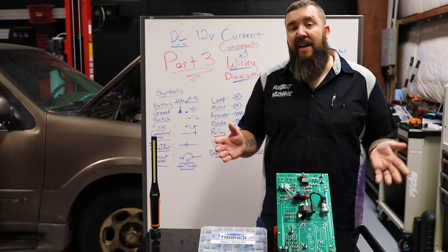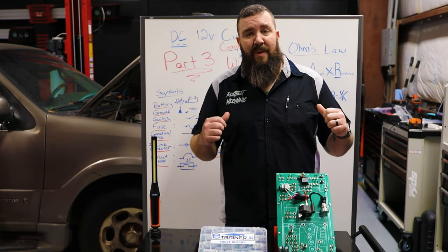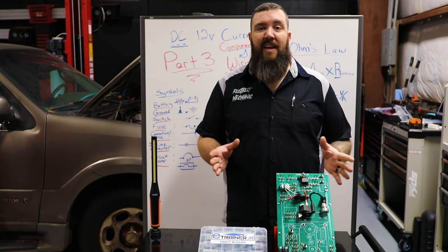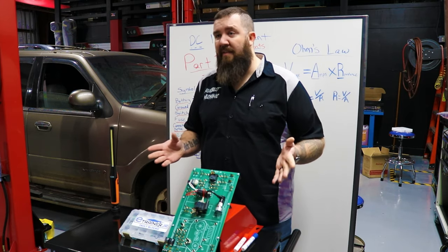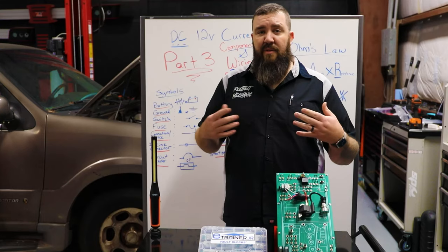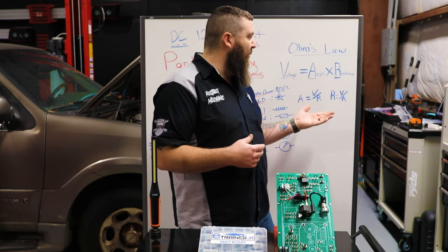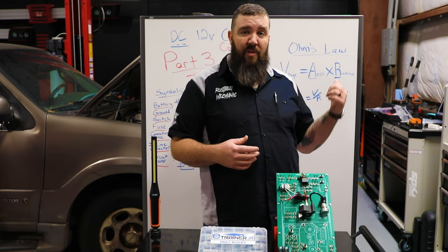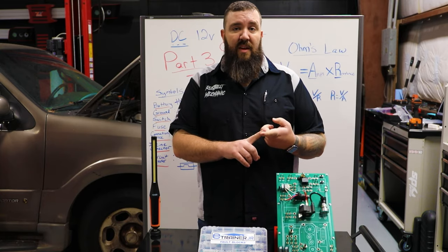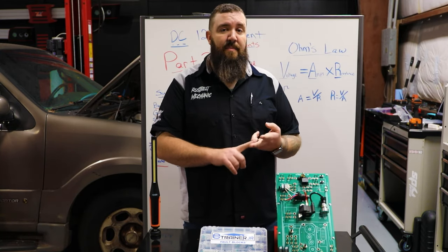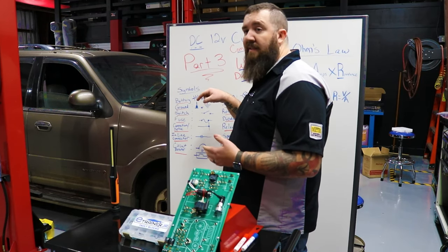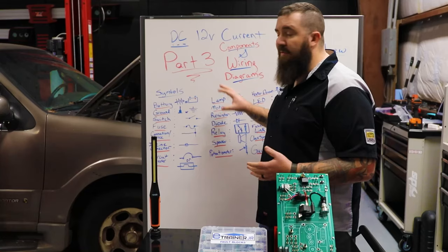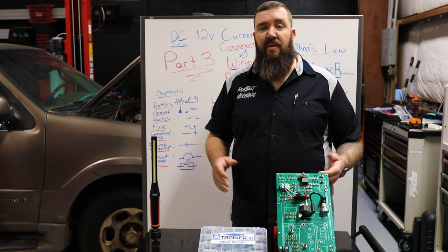Hey, what's happening guys? Thanks for stopping back into the channel today right here with the Rust Belt Mechanic. Today we're going to be stopping back into our electrical diag series part three. We've already gone through the basics of how a circuit works, how the 12 volt systems work, the basics of the tools and how to diagnose them with Ohm's Law, some uses with tools and test lights, and some meter use as well. Today we're going to be going over wiring diagrams, the components in those systems, and the symbols you'll see within the wiring diagrams. Let's get into it.